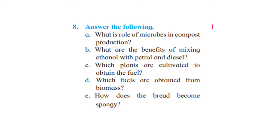Question number 8, answer the following. First: what is the role of microbes in compost production? This answer is given on page number 83, last paragraph — sewage management — continuing to page 84, first paragraph. Second: what are the benefits of mixing ethanol with petrol and diesel? This is on page number 82, microbes and fuels, second point. Ethanol is a clean fuel obtained during fermentation of molasses by yeast saccharomyces, and its production is much cheaper. Which plants are cultivated to obtain the fuel?